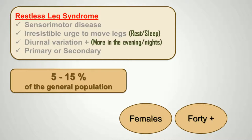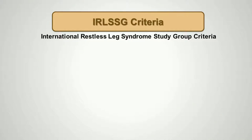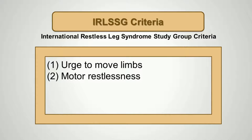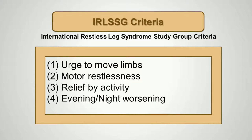Restless Leg Syndrome is diagnosed using the International Restless Leg Syndrome Study Group criteria. The four salient diagnostic features are: 1. Urge to move limbs, commonly associated with premonitory sensory disturbances. 2. Motor restlessness. 3. Relief by activity. 4. Diurnal variation in the form of evening or nighttime worsening of symptoms.